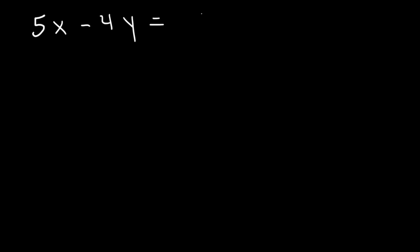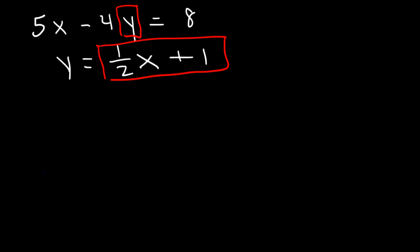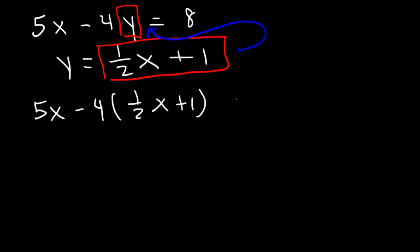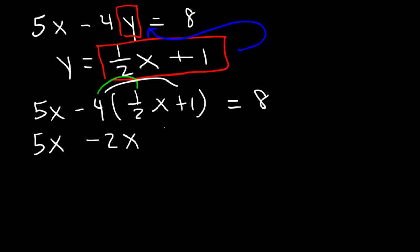Here's another similar problem. Let's say that 5x minus 4y is equal to 8, and also that y is 1 half x plus 1. Just like before, we're going to replace y with 1 half x plus 1 and put it in the first equation. So we're going to have 5x minus 4 times (1 half x plus 1), and that's going to equal 8. Now let's distribute the 4: 4 times 1 half is 2, so we have negative 2x. Negative 4 times 1 is negative 4. Now combine like terms: 5x minus 2x is 3x.